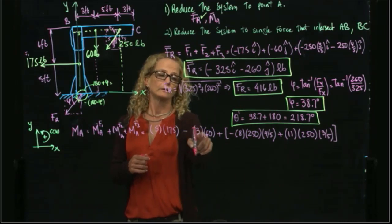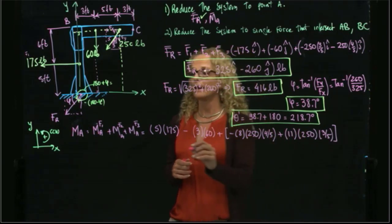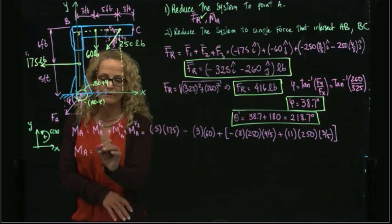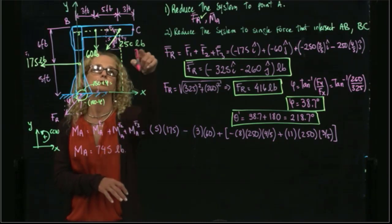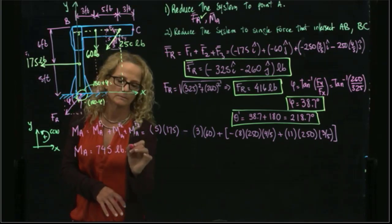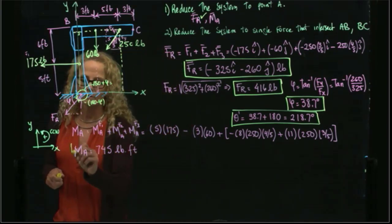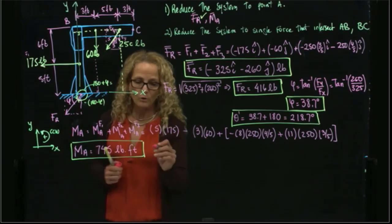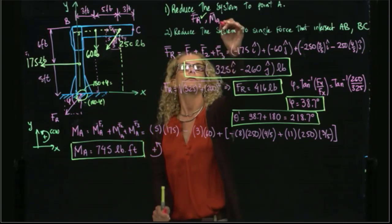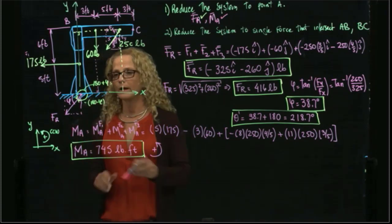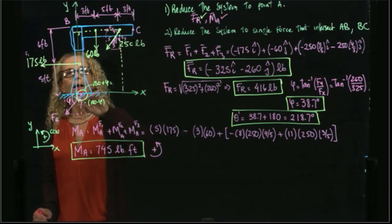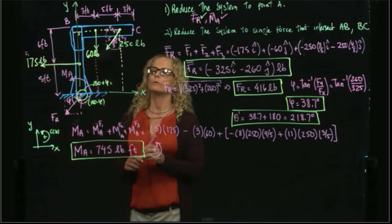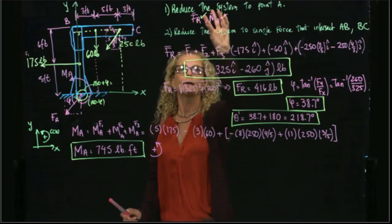Adding this — multiply and subtract, multiply and subtract, multiply and add — the moment result is 745 pound-feet. Since I got a positive value, this moment is counterclockwise. So we were able to reduce the system to a resultant force and a resultant counterclockwise moment at A.